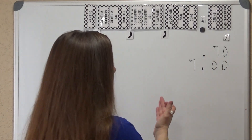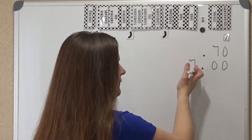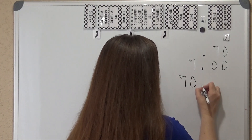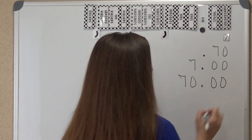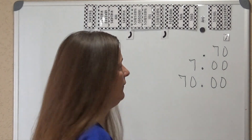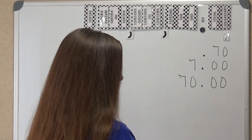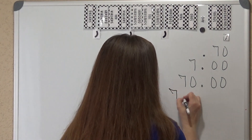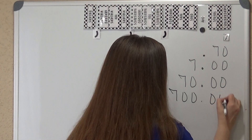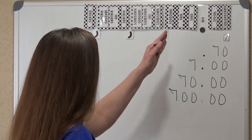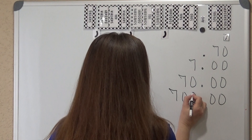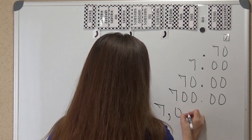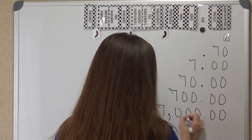If I continue on, 7 dollars or 7 ones times 10 is going to give me $70. And if I continue moving to the left, $70 times 10 is going to give me $700. And if I go one more place, $700 times 10 is going to give me $7,000.